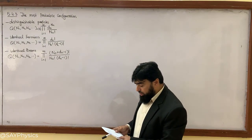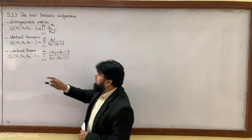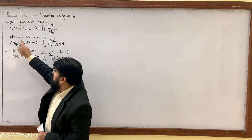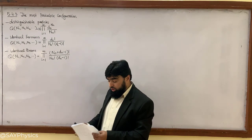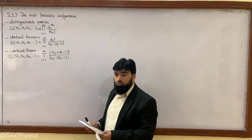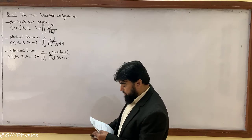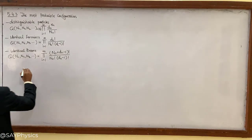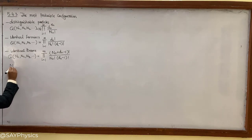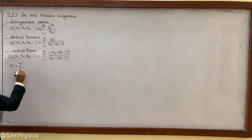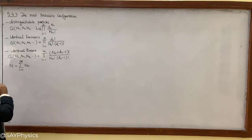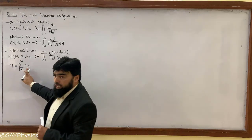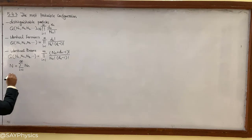To find the most probable configuration, we will maximize Q for all three categories. This maximization is performed under certain restrictions, which we call constraints. The first constraint is that the total number of particles is N, equal to the summation from i = 1 up to infinity of N_N, meaning the total number of particles is fixed.